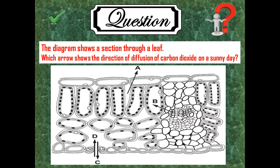The diagram shows the sections through the leaf. Which arrow shows the direction of diffusion of carbon dioxide on a sunny day? On the sunny day, if the plant is performing photosynthesis and it's absorbing carbon dioxide, the carbon dioxide will be less inside of the leaf. So this will move from outside to inside, down their concentration gradient. So D is our answer.